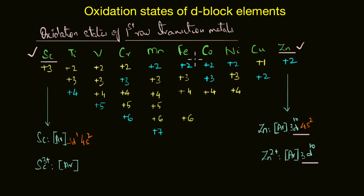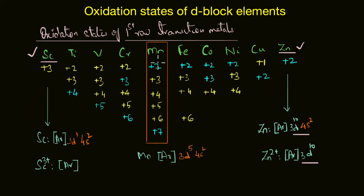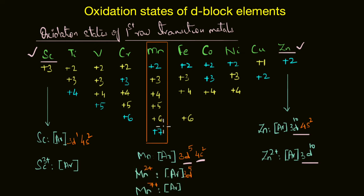Elements towards the middle of the series exhibit the maximum number of oxidation states. Take manganese for instance — it shows oxidation states corresponding to the loss of electrons present in both the 4s and 3d orbitals, ranging all the way from +2 to +7. It is +2 when it loses two of the 4s electrons, and +7 when it loses all of the 3d as well as 4s electrons. The +2 and +7 states are the most stable for manganese, as +2 gives a half-filled d⁵ configuration.